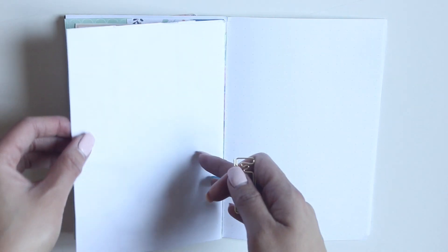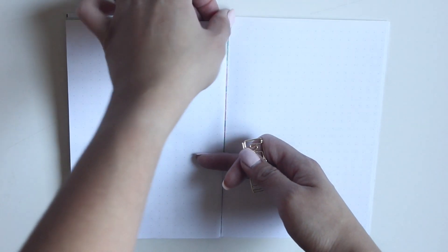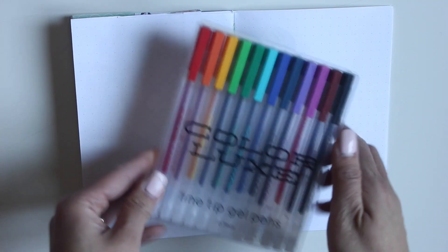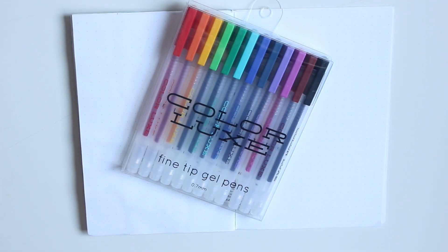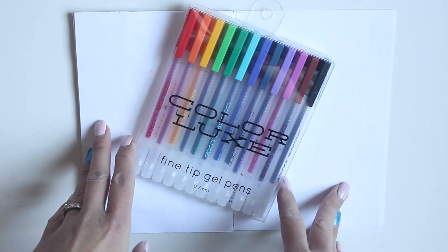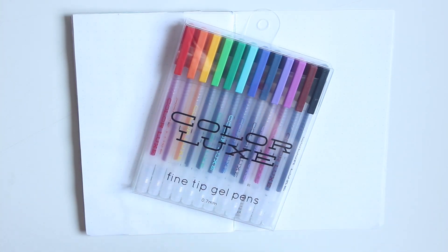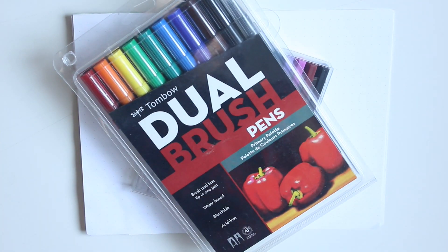I'm gonna be using these gorgeous Colourplex fine tip gel pens. I haven't used these before, so this will be a way for me to test them out. But I'll be doing a rainbow spread and then adding some decorative features with my Tombow dual brush pens. Alright, so let's get started.